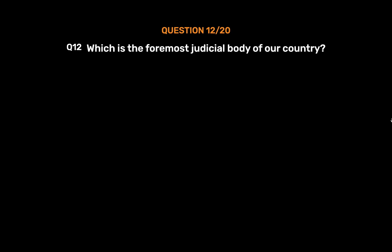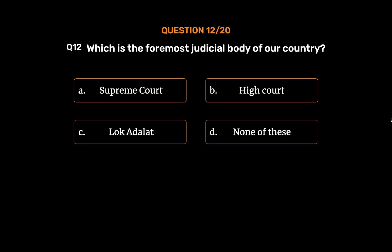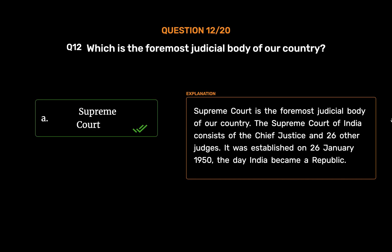Question No. 12. Which is the foremost judicial body of our country? Option A: Supreme Court. Option B: High Court. Option C: Lok Adalat. Option D: None of these. The correct answer is Option A: Supreme Court. The Supreme Court is the foremost judicial body of our country. The Supreme Court of India consists of the Chief Justice and 26 other judges. It was established on the 26th of January 1950, the day India became a republic.